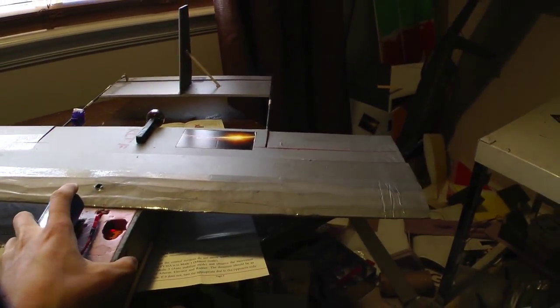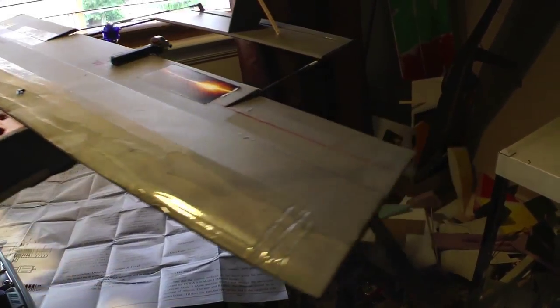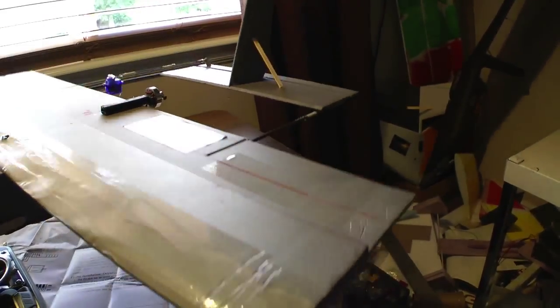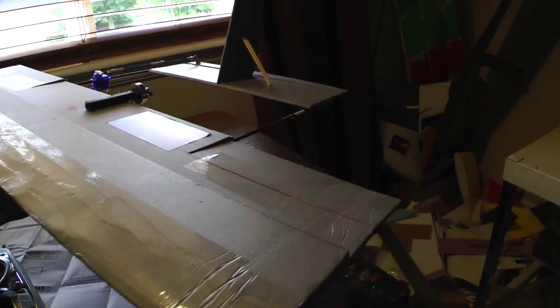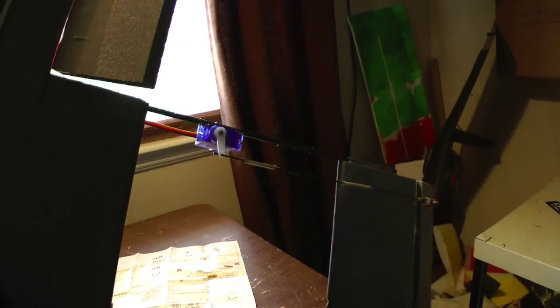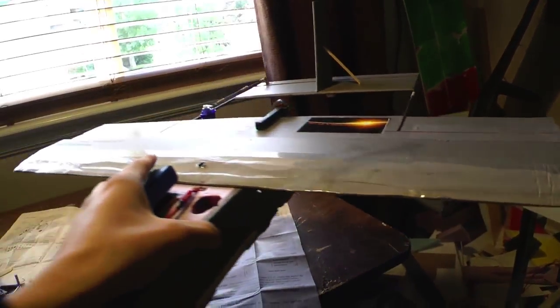So when I flip that on, it's now in stabilized mode. As you can see, when I'm tilting the plane back and forth, the ailerons are moving to counteract that. Same as the elevator, when I move it like this, you can see the elevator moving to counteract that. And if I was using rudder, that would work too.